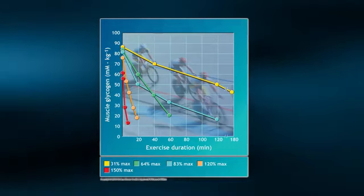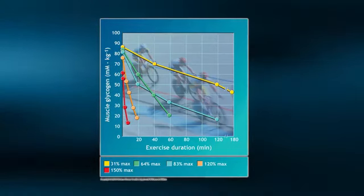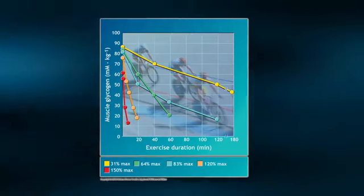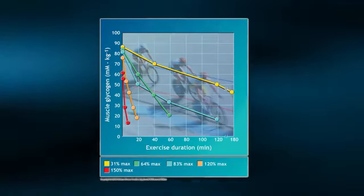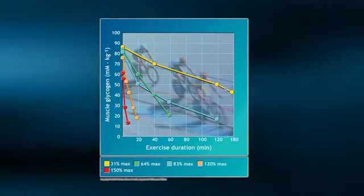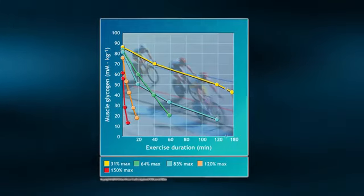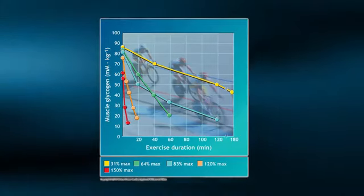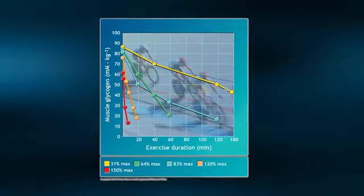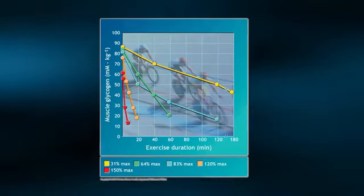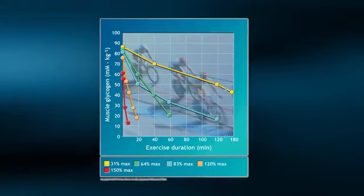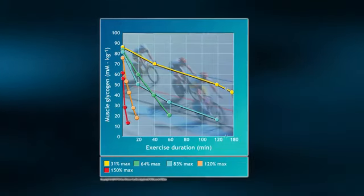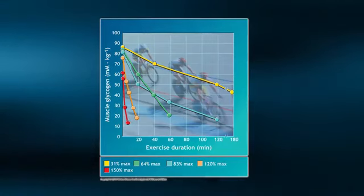There are two main reasons for this response. First, the rate of ATP utilization is extremely high at this exercise intensity, and thus ATP production must attempt to keep pace. Given that this exercise intensity can only be maintained for a very short period of time, the majority of ATP produced must come from glycogen already stored in the muscle.